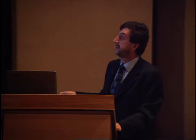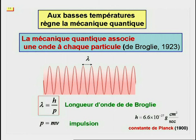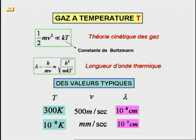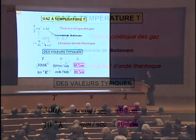Puisque la constante de Planck est très petite, on comprend qu'en général, les valeurs de lambda sont aussi très petites, sauf si on arrive à décroître beaucoup la valeur de la vitesse. Considérons par exemple un gaz à température T. La théorie cinétique des gaz nous dit que la température fixe la valeur moyenne de la vitesse au carré, et par conséquent la longueur d'onde moyenne des atomes. Par exemple, si on travaille à température ambiante, on trouve des vitesses très élevées.